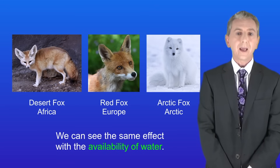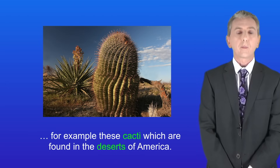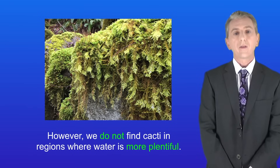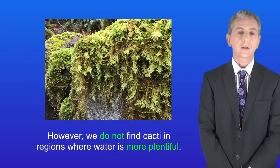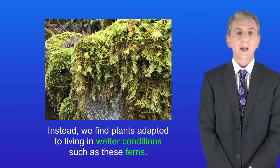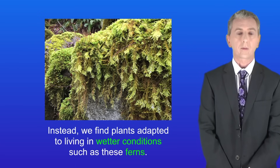We can see the same effect with the availability of water. In the desert we find plants adapted to live where water is scarce — for example, cacti found in the deserts of America. However, we do not find cacti in regions where water is more plentiful. Instead we find plants adapted to wetter conditions, such as ferns.